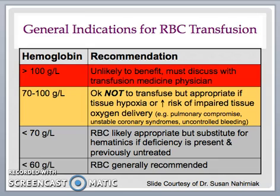Finally, if hemoglobin is less than 60, then red cell transfusion is more likely to be generally recommended, keeping in mind that non-transfusion alternatives, including hematinics, should still be considered in the absence of hemodynamic instability in a deficient patient.